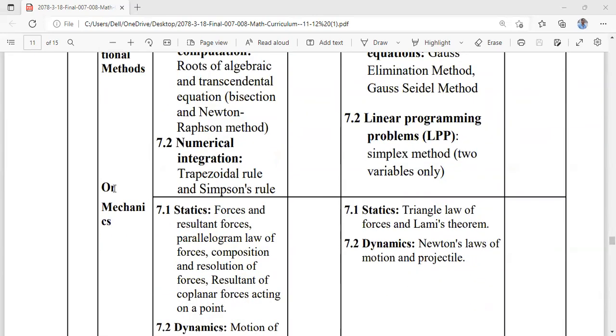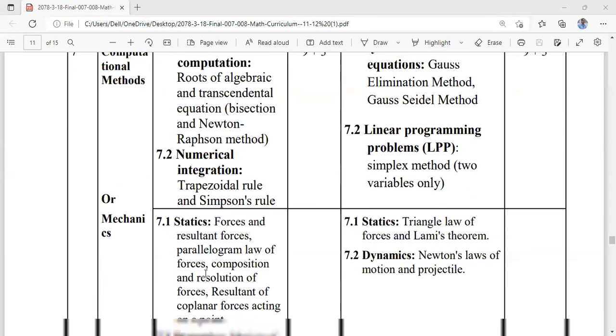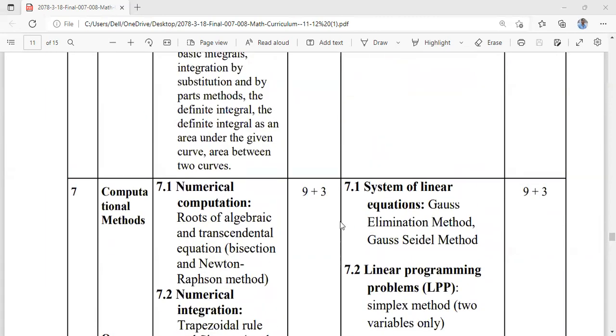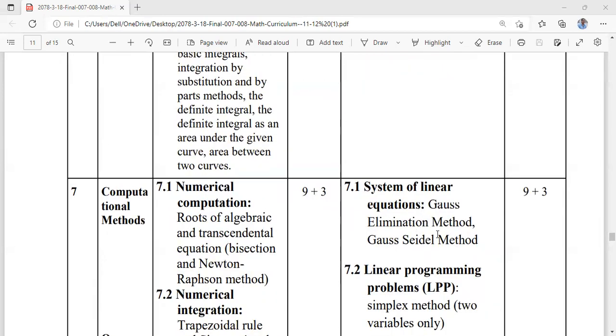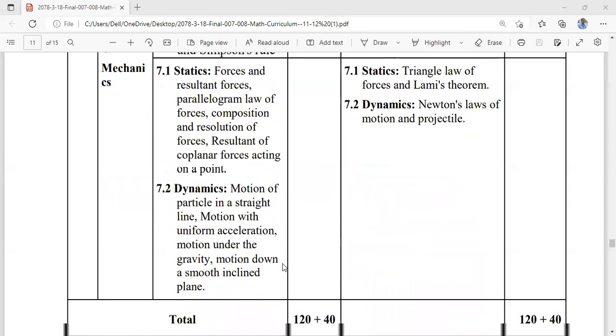Numerical methods and mechanics provide convenience to students. Previously, students had to study both, but students entering class 11 in 2079 can choose either computational methods or mechanics. When they reach class 12, they can study whichever topic they prefer. The Gauss elimination method, which was in the old course, has been reintroduced.